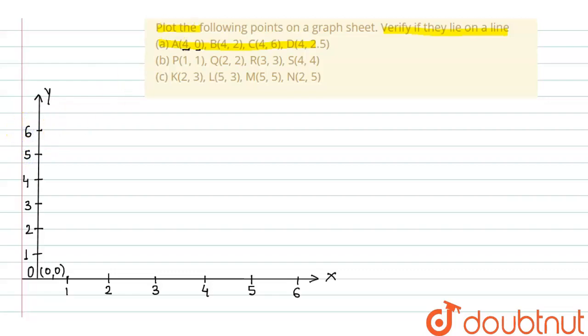So, I am starting from first point. A, 4, 0 means on x-axis 4 and y-axis 0 means this is our A point whose coordinates are 4 and 0.